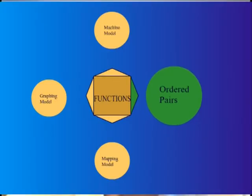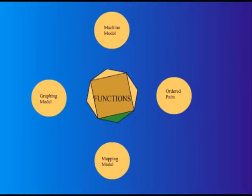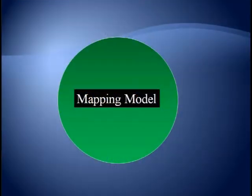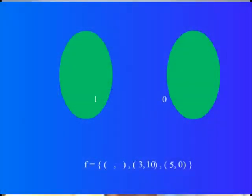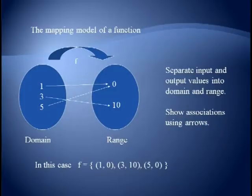Our next model is called the mapping model. It's useful when you want to analyze the domain and the range in greater detail. The idea is that we list the domain and the range separately. We draw an arrow from each input value to its corresponding output value. So the mapping shown here is identical to the set of ordered pairs (1, 0), (3, 10), and (5, 0).